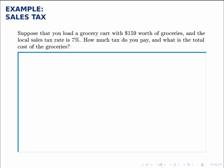To figure this out, we're going to find what 7% of $159 is, and of course we do that by multiplying the 7% times 159.